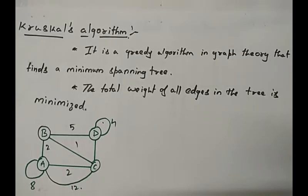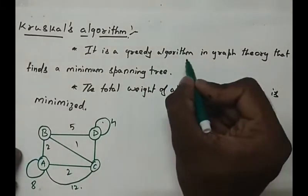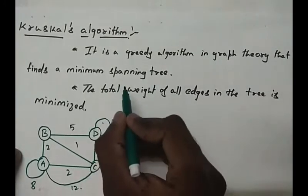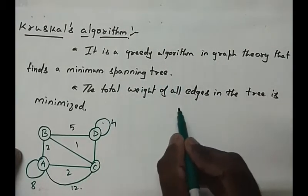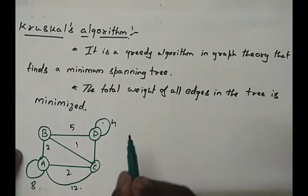In this video I am going to explain Kruskal's algorithm. Kruskal's algorithm is a greedy algorithm in graph theory which finds a minimum spanning tree. The total weight of all the edges in the tree is minimized.